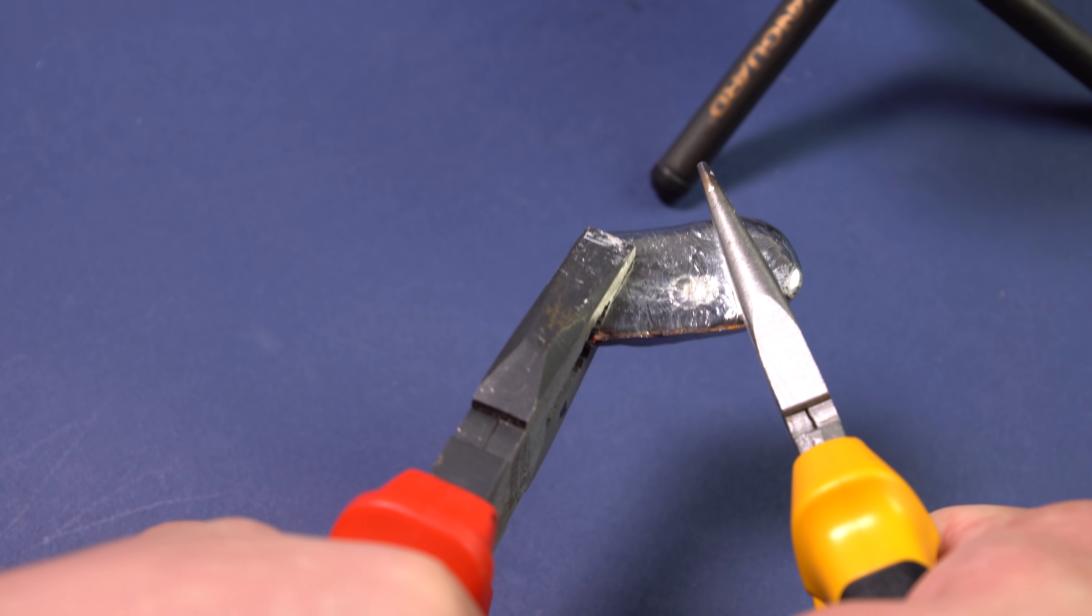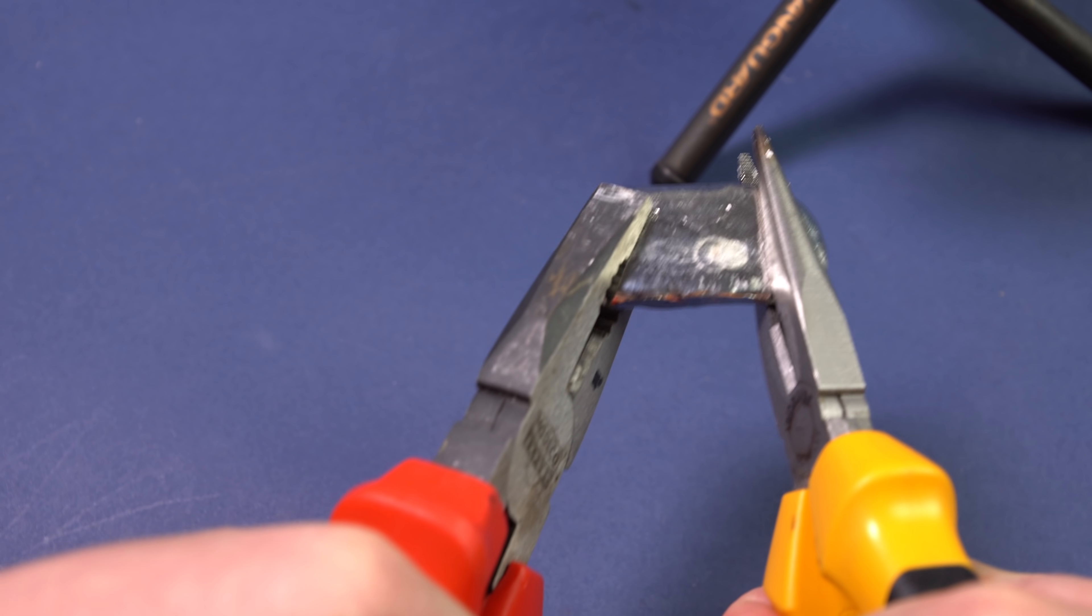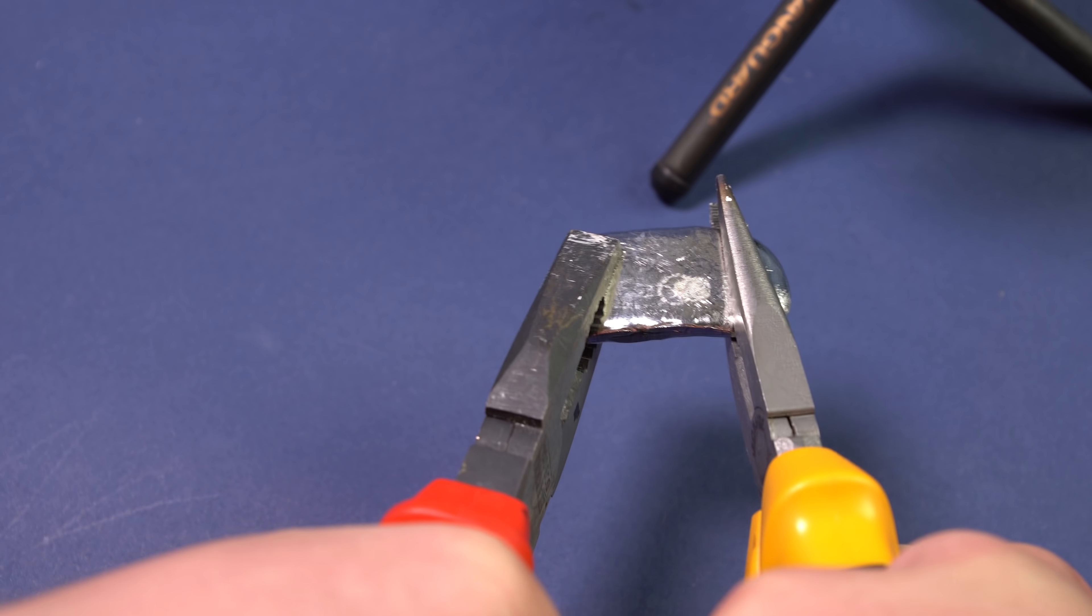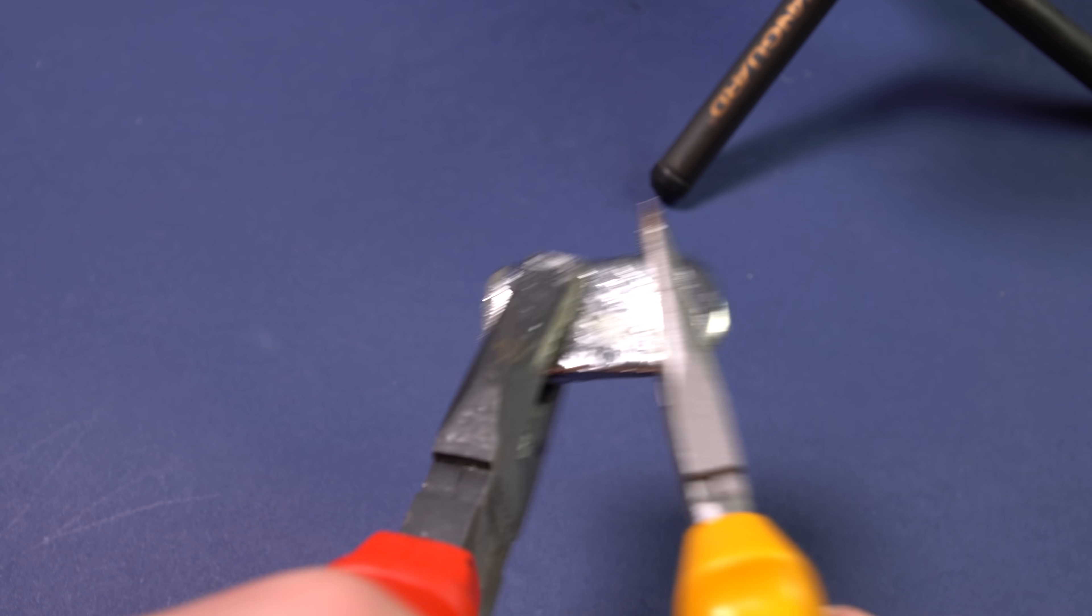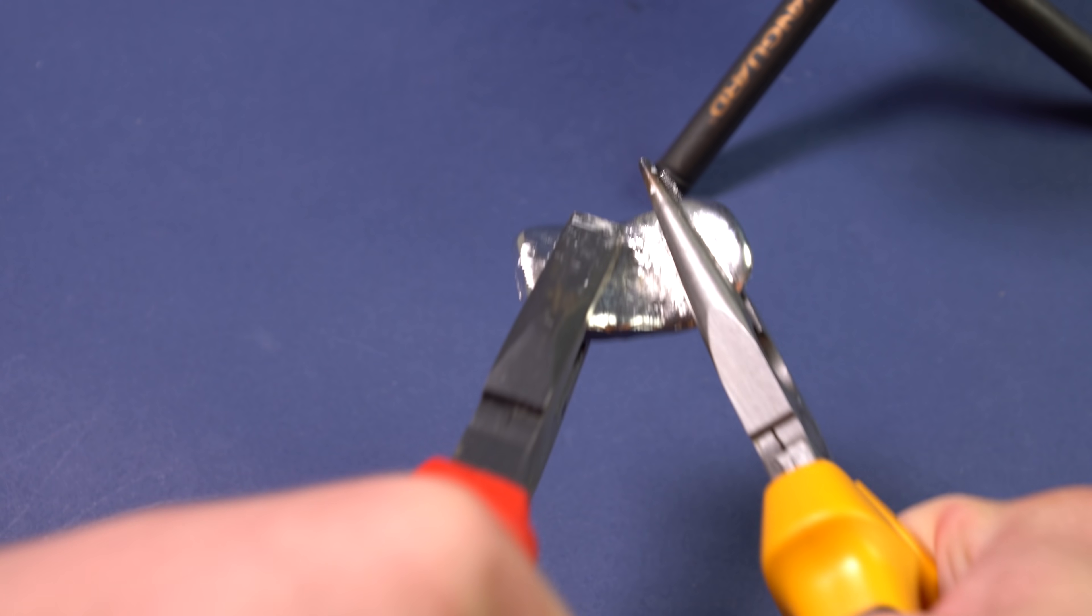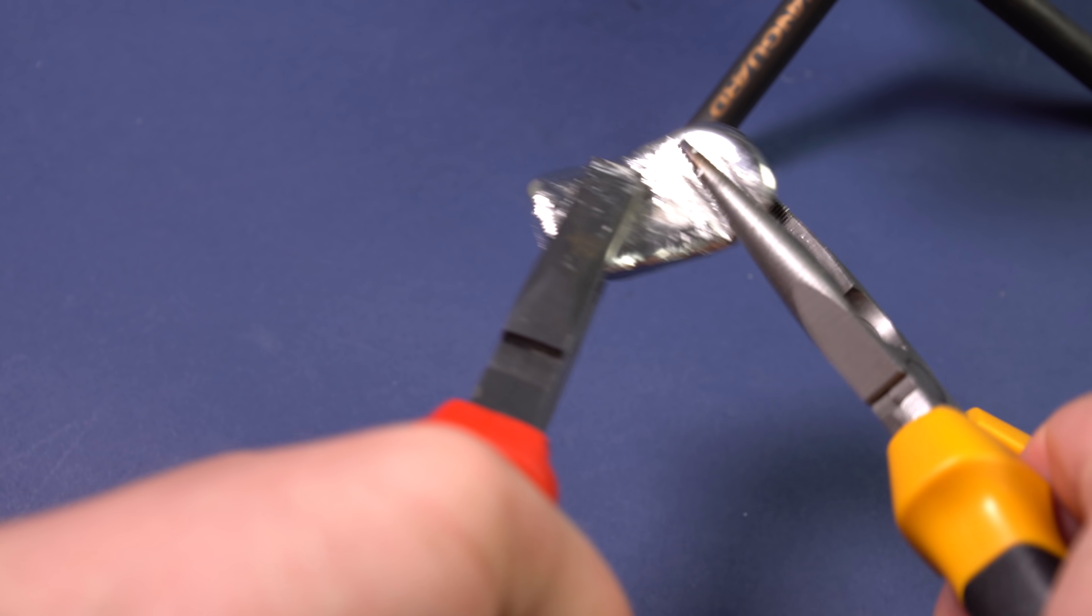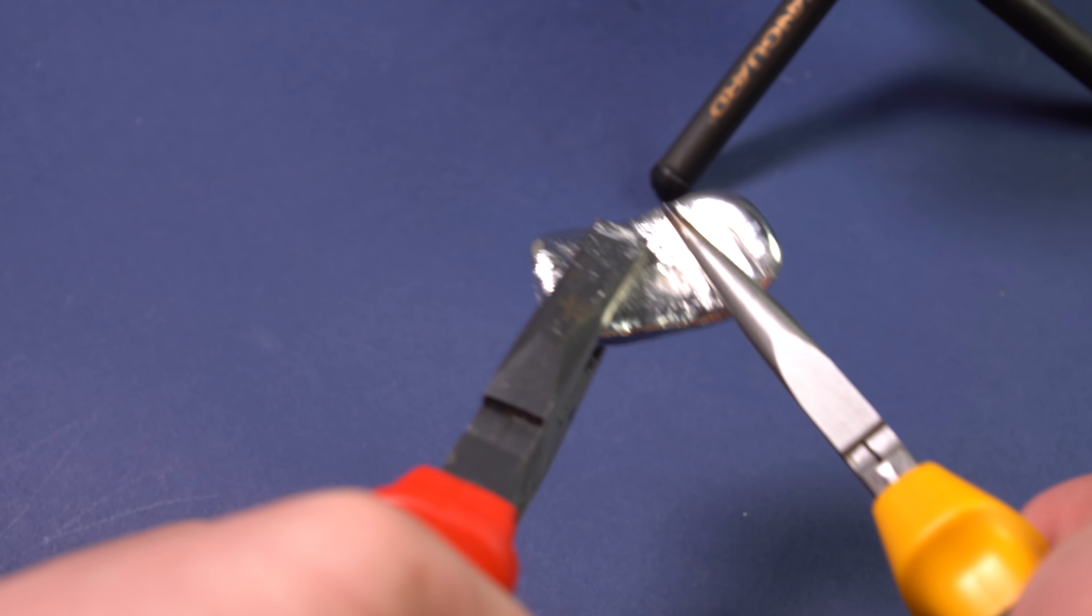Also, if you bend an ingot of a very pure tin, you can hear an interesting crunch caused by deformation of crystals inside the metal. The same musical property can also be found in ingots of pure zinc and indium. They could probably start a band together.